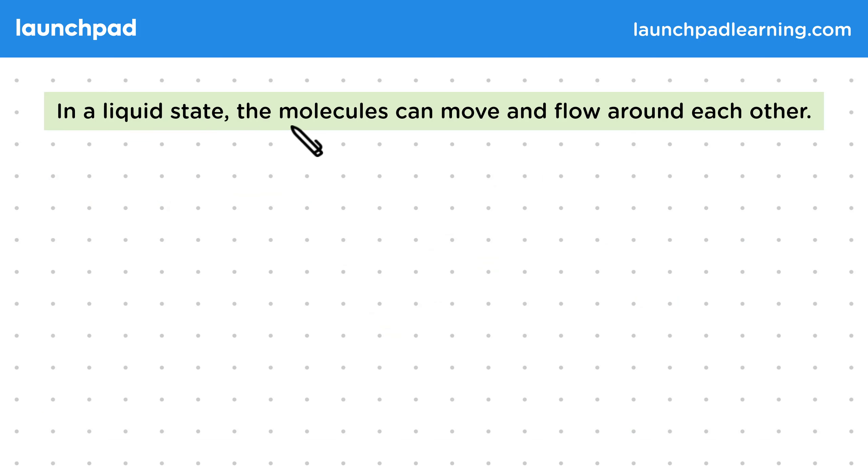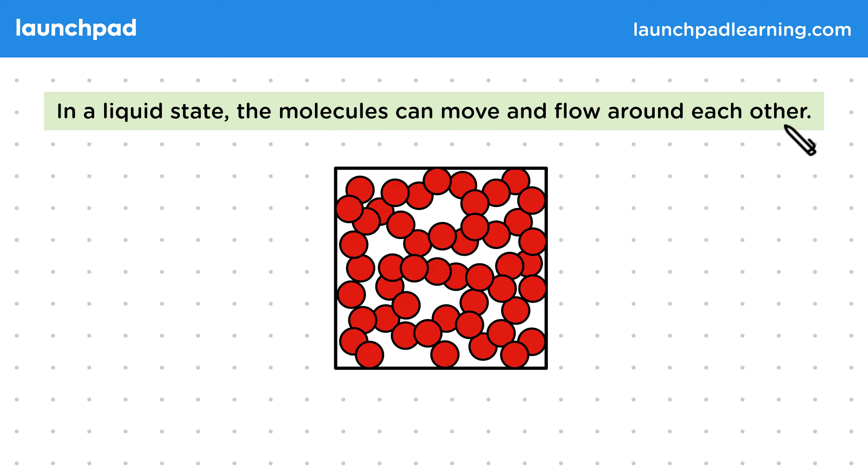Then in a liquid state, the molecules can move and flow around each other. Remember in this state, the bonds are weaker, meaning the molecules can now flow around each other. In other words, they move while staying in contact.